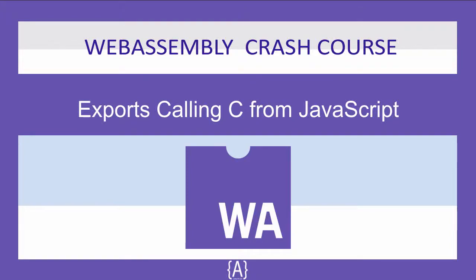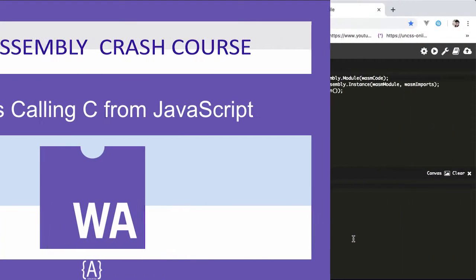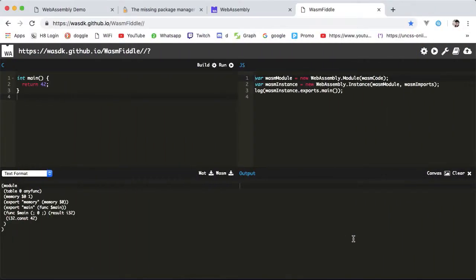Hey, how's it going guys? Sat here with another tutorial on WebAssembly. In this tutorial, I'm gonna teach you how you can export a C function into JavaScript. With our first WebAssembly module loaded, we are now ready to explore all the important export objects of a compiled module, and see how to call the main function from the browser using JavaScript.